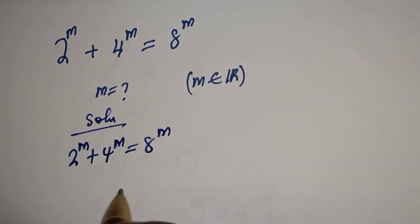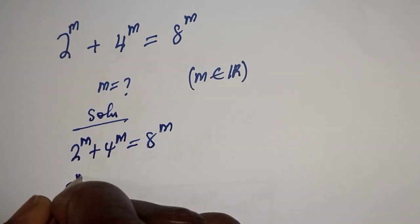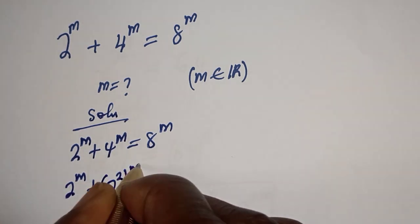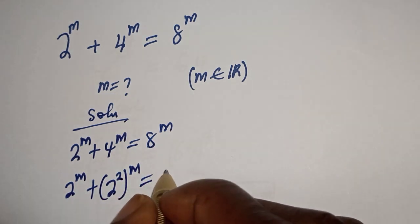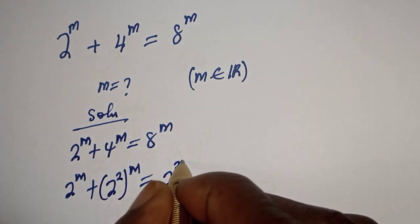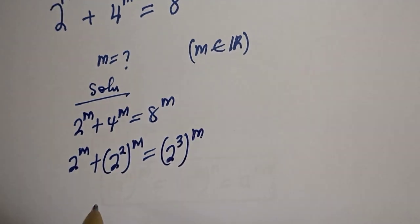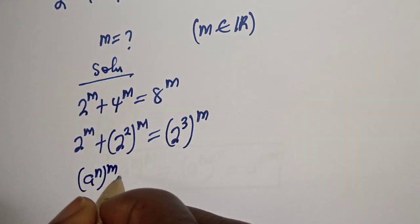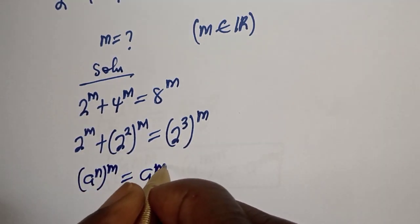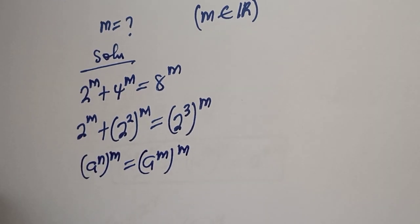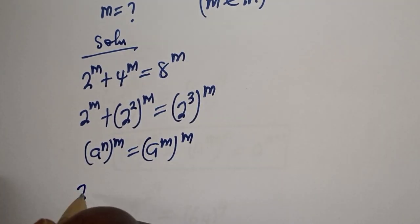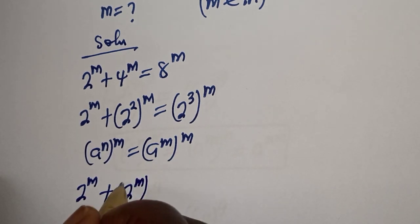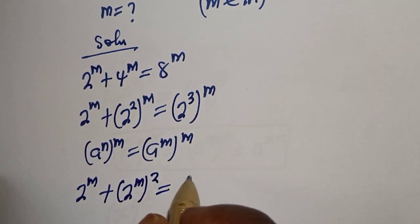Then 2 raised to power m plus 4 raised to power m can be written as: 2 squared to the power of m is equal to 8 raised to power m, which can be written as 2 raised to power 3, to the power of m. Take note that if you have a raised to power n, to the power of m, this is equal to a raised to power m, to the power of n.